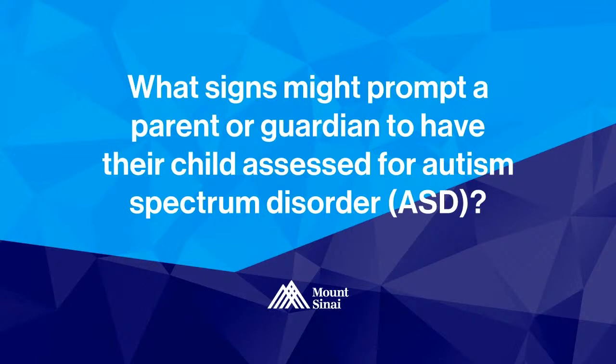Several different signs can prompt a parent or an individual to seek out an evaluation for autism. When we think about autism, it's a constellation of differences — differences in the area of social communication and social reciprocity, and differences in terms of restricted and repetitive interests and behaviors.